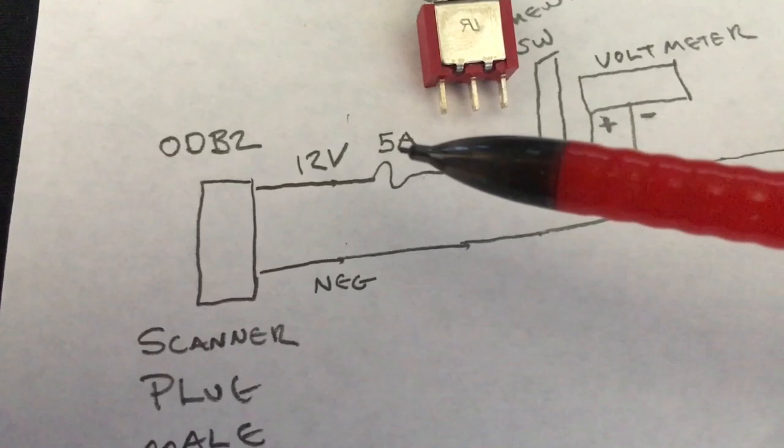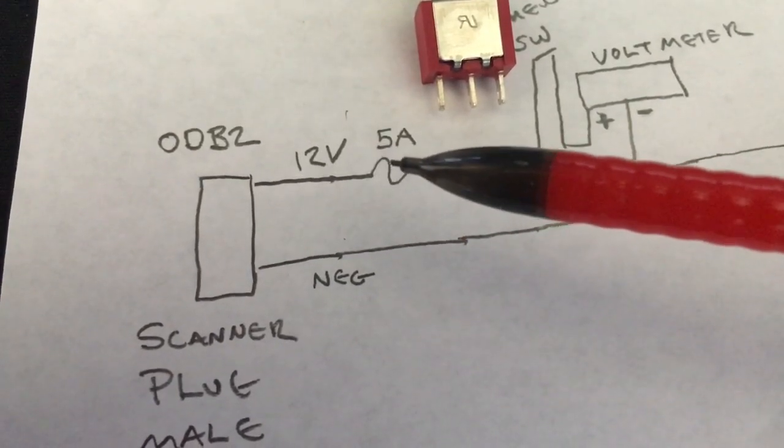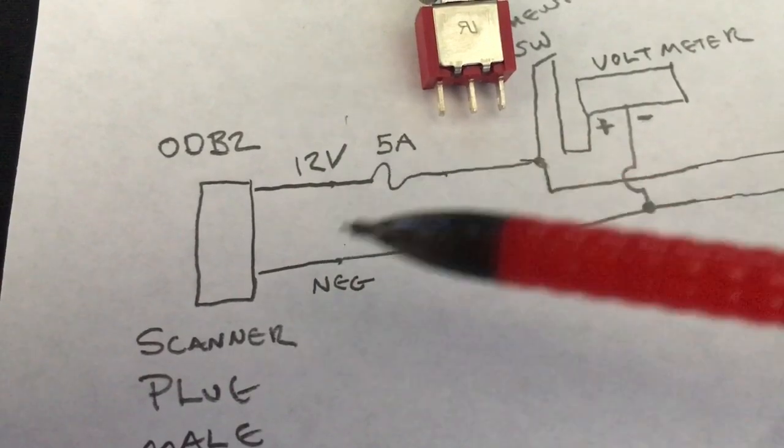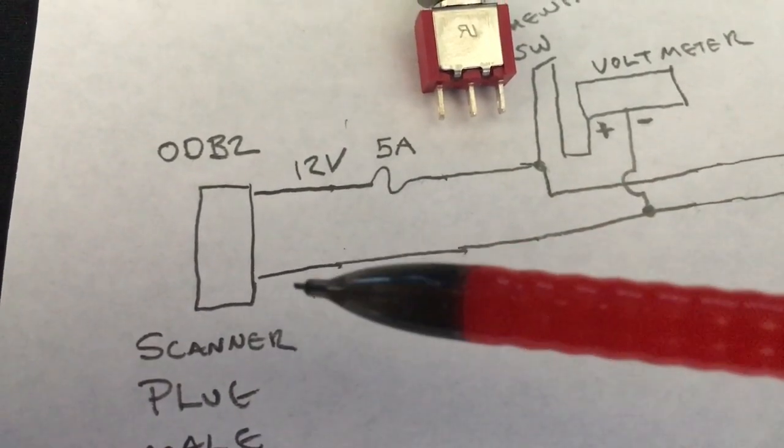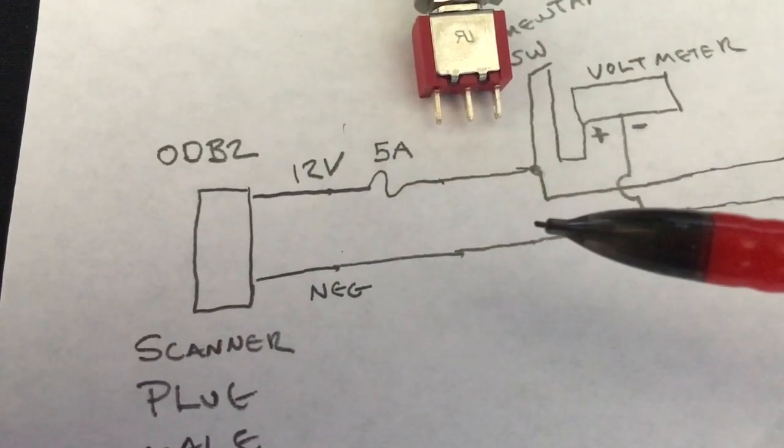We want to have the fuse very close to the connector if we can. I'm putting a 5 amp fuse in here and then the negative comes, so there's just a two conductor cable that comes off the ODB2.